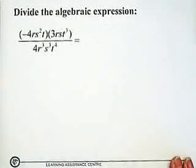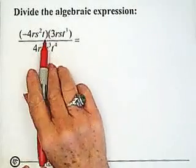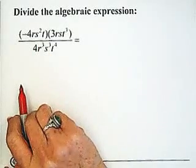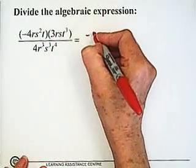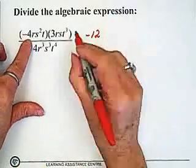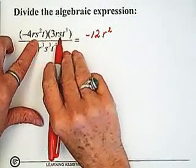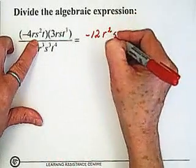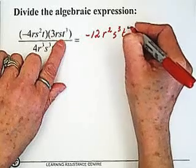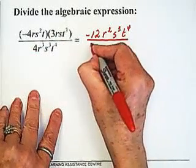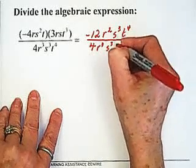Let's try another one. Now when you have something like this — a multiplication using brackets — the first thing you want to do is multiply these through. So we have minus 4 multiplied by 3, which gives us minus 12. We have r multiplied by r, which gives us r squared. We have s squared multiplied by s, which gives us s cubed. And we have t multiplied by t cubed, which gives us t to the fourth. Now we're going to divide by 4, r cubed, s cubed, t to the fourth.